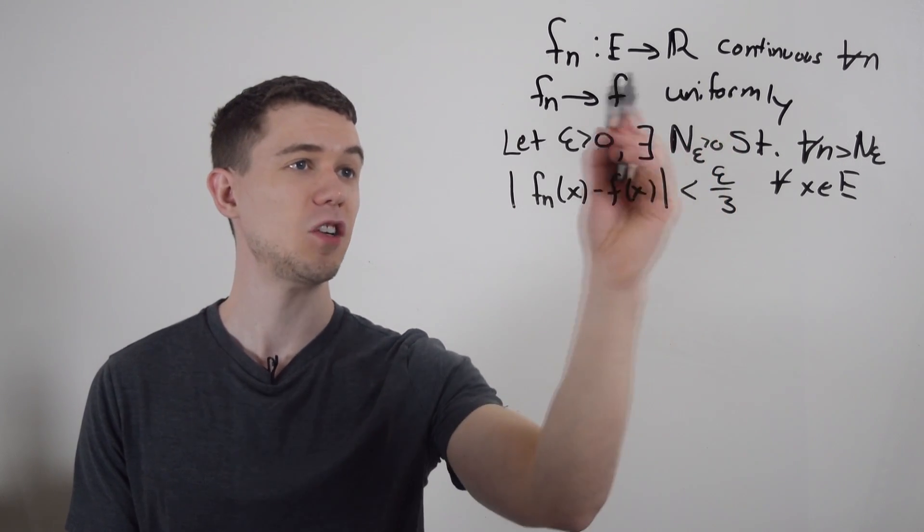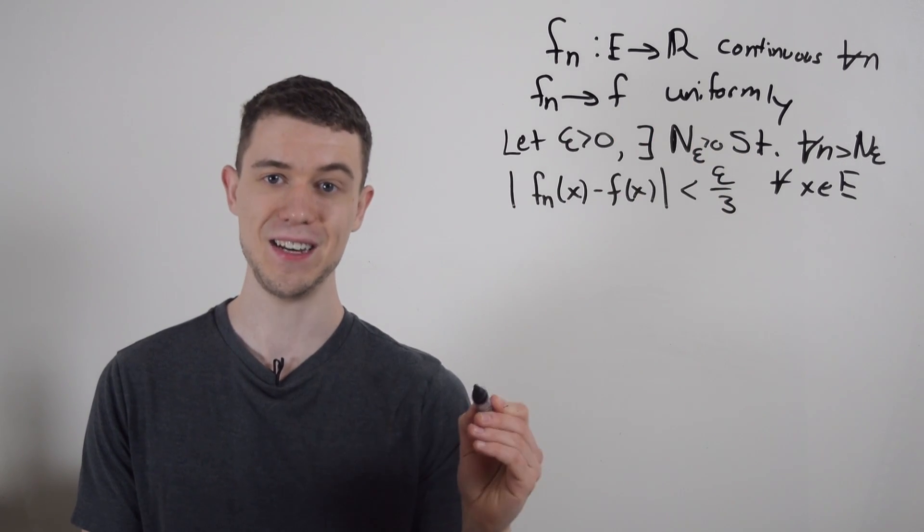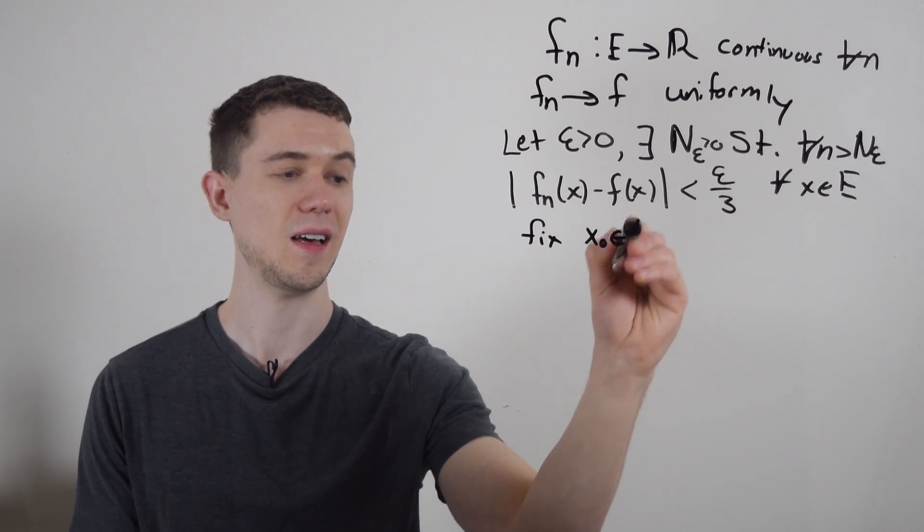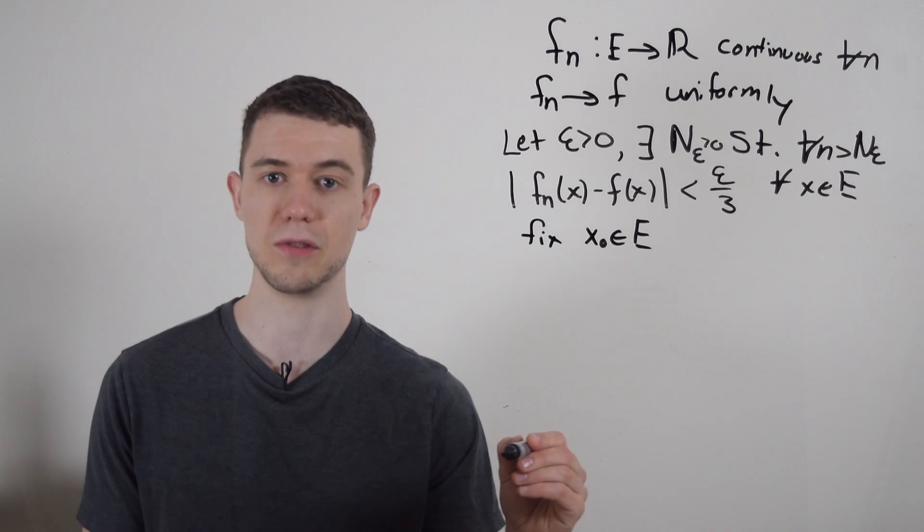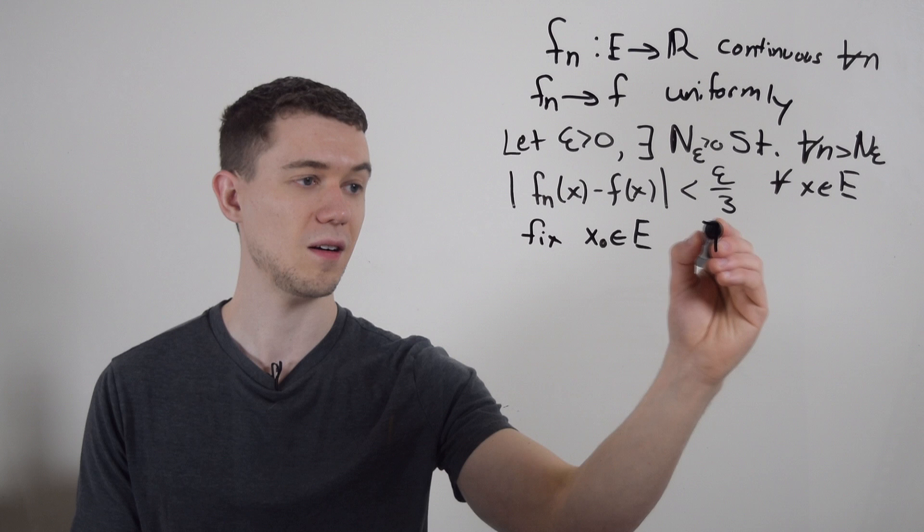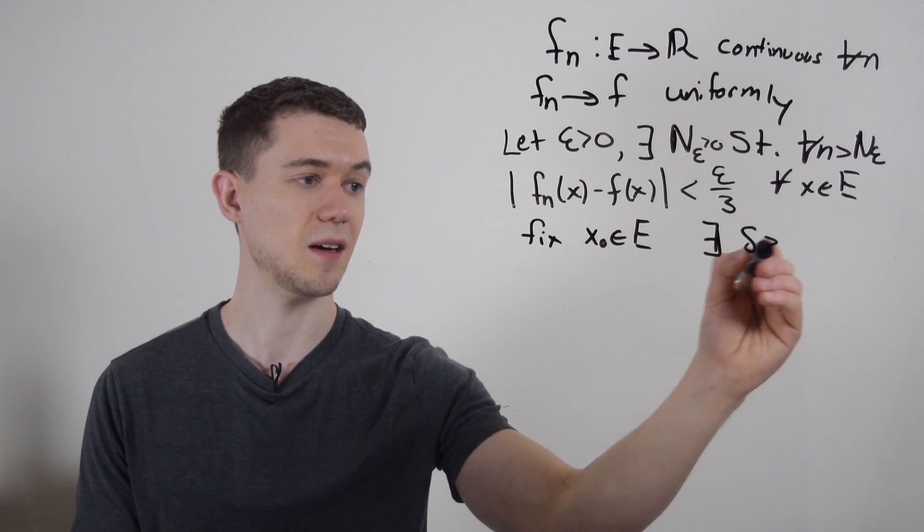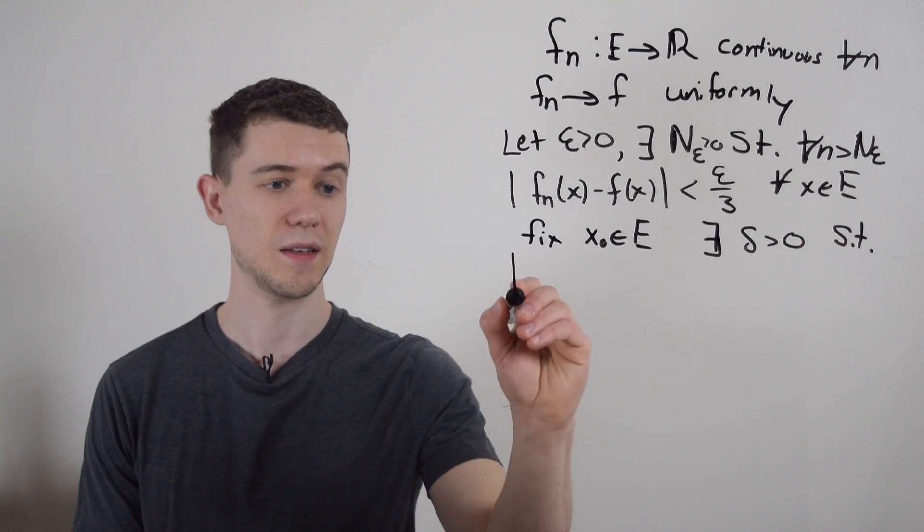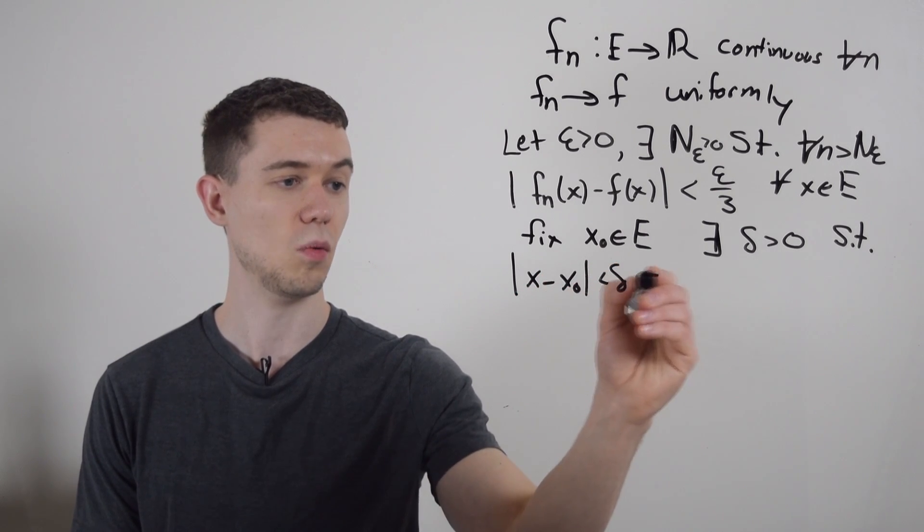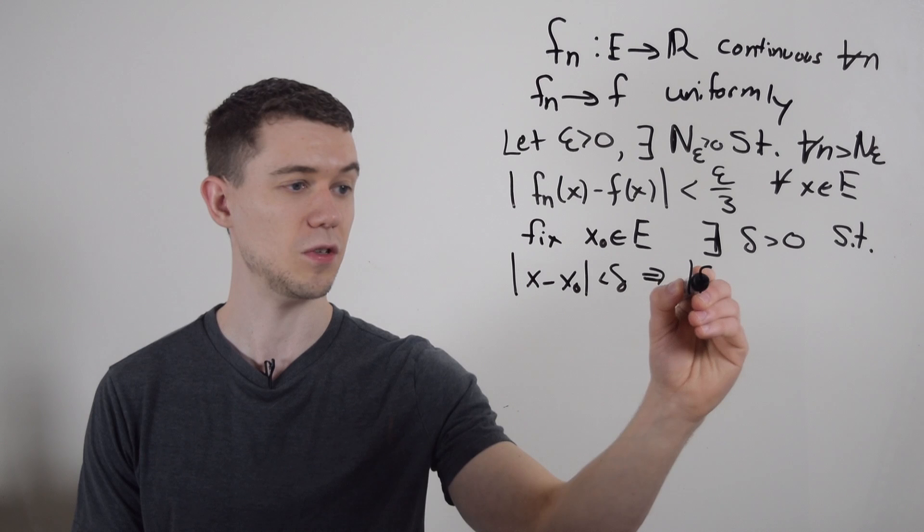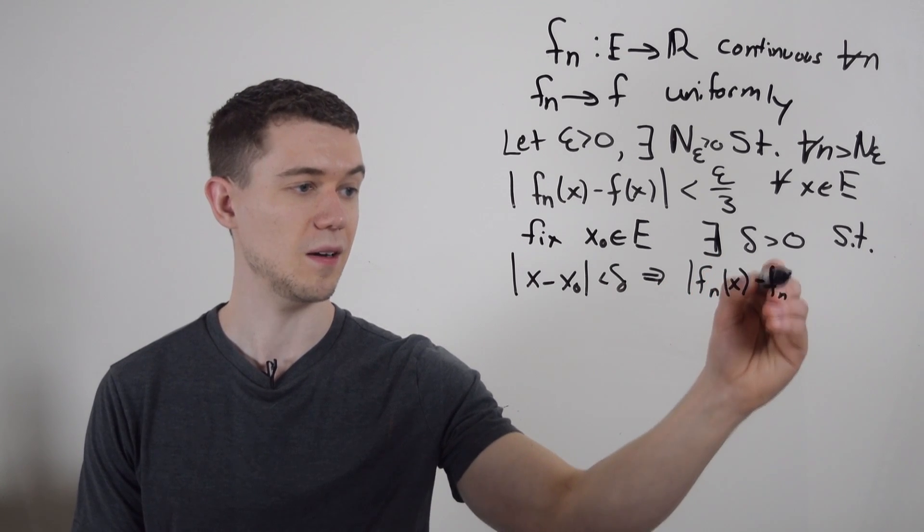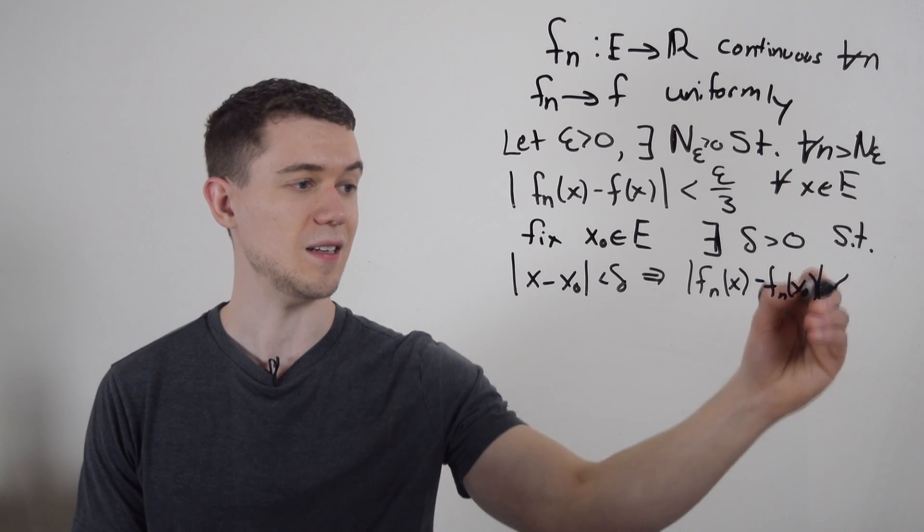What does it mean if each individual f_n is continuous? Well, that means if I fix some x naught in my domain, in my closed interval a, b, which I'm calling E, that means that there exists some delta greater than zero, such that the distance between x and x naught less than delta would imply the distance between f sub n of x minus f sub n of x naught is less than epsilon.